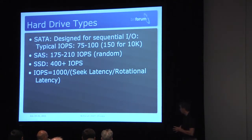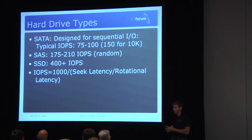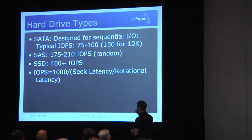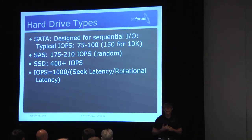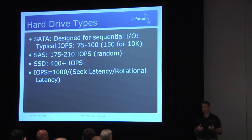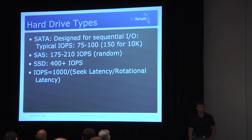When you're buying storage, you have to place these IOPS somewhere — basically building a racetrack for them. SAS can typically get about 175 to 200 IOPS, and SSD — based on the memory type, NOR or NAND — can get 400 plus IOPS. You can calculate IOPS for spinning disk using the seek latency divided by the rotation latency divided by 1,000, and that gives you how many IOPS you should expect on that drive.